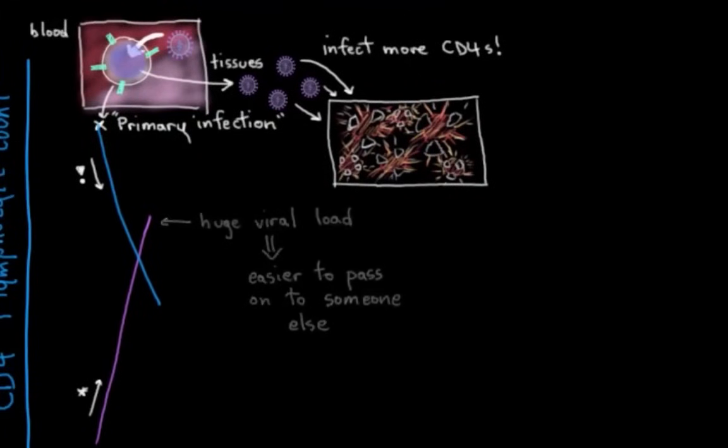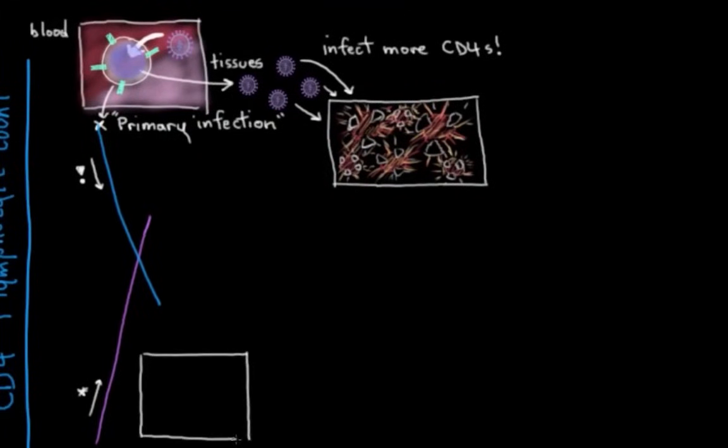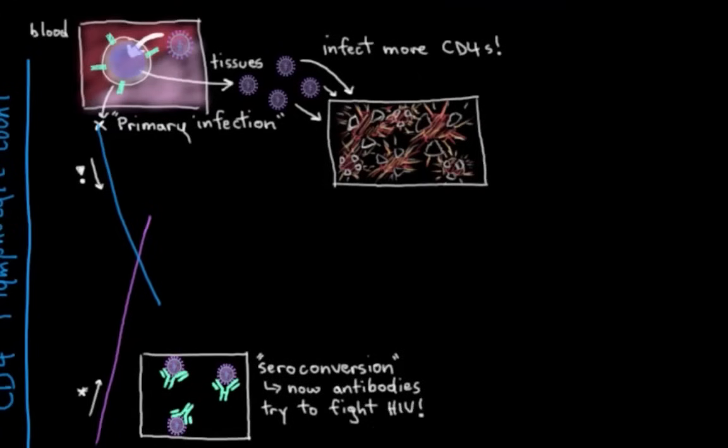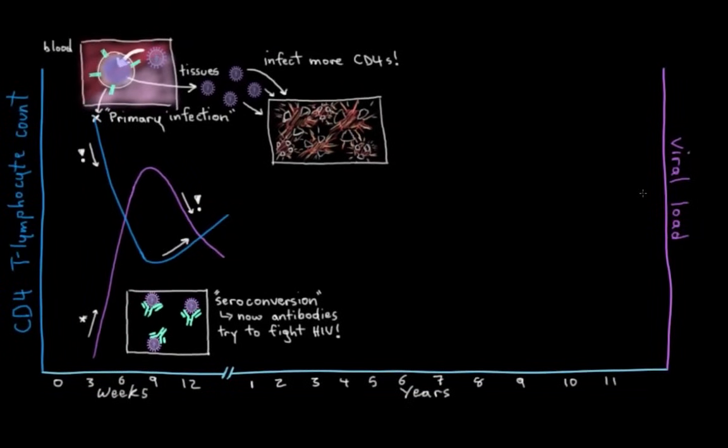One good thing here is that eventually, maybe a month or so in, your immune system gets somewhat of a handle on the virus, and it starts to make anti-HIV antibodies. They start to fight off the virus to some extent, and this is called seroconversion. The antibodies get to work on helping to destroy the viral particles, and that's why we see this decrease in viral load, and this also gives our CD4 cells a chance to recover because there's less virus around to infect them.